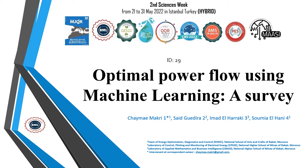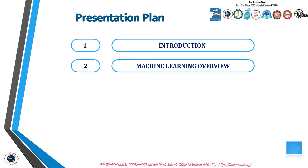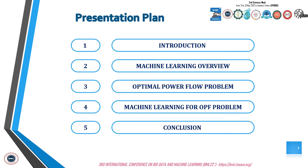Before starting, I would like to particularly thank the members of the jury, the organization community, and all those present. This presentation is made up of five parts: first, an introduction to the problem; then a brief overview of machine learning; after that, a presentation of the optimal power flow problem; subsequently, an exhibition of machine learning algorithms used to solve the optimal power flow problem; and finally, a conclusion and future work.